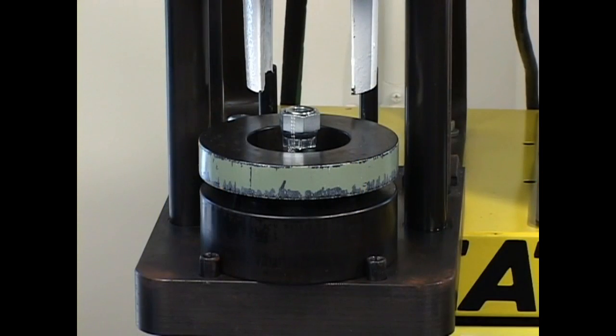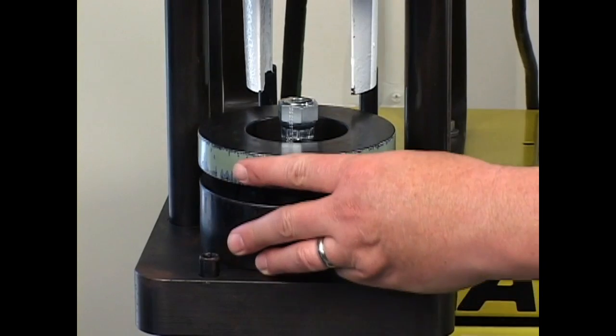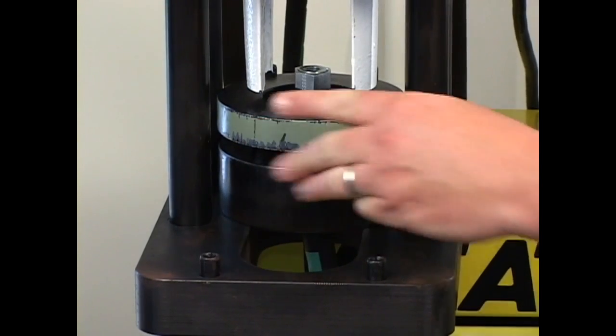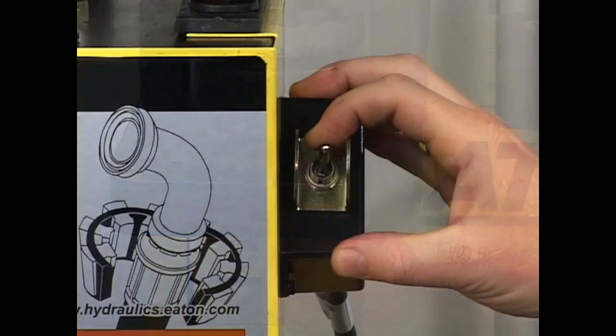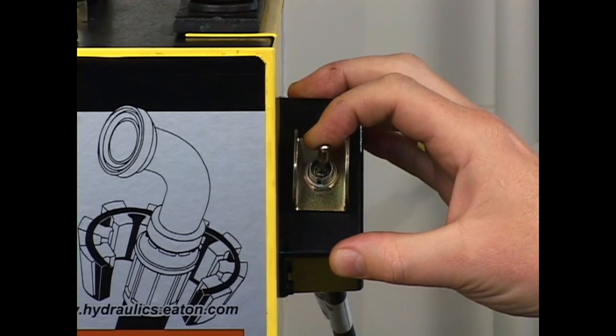If the die ring sets on the base plate and has been pulled forward, push it back against the alignment pins. To help avoid injury, remember to keep one hand on the hose assembly being crimped and one hand on the activating switch or lever.